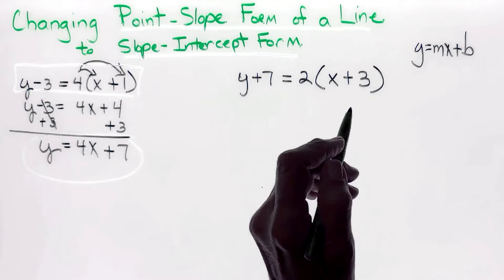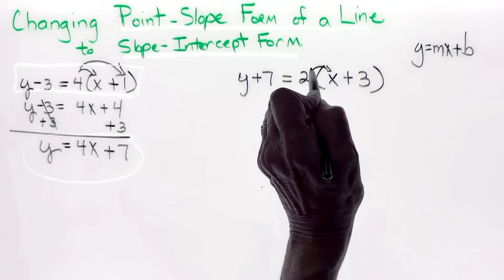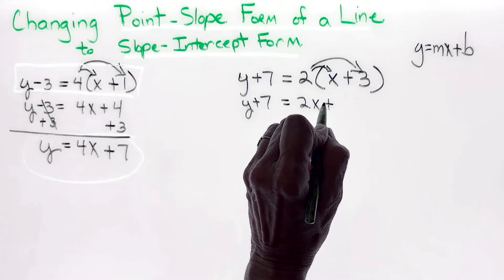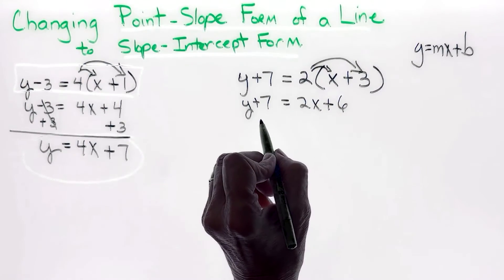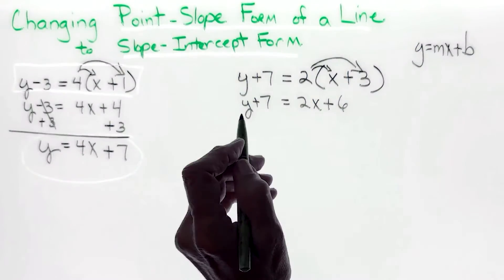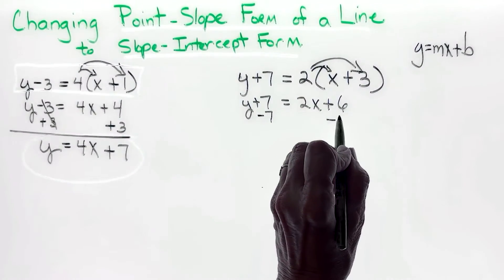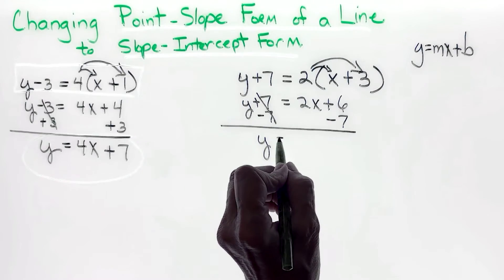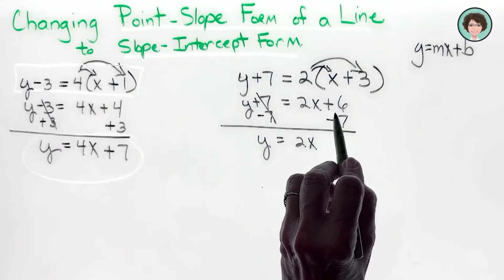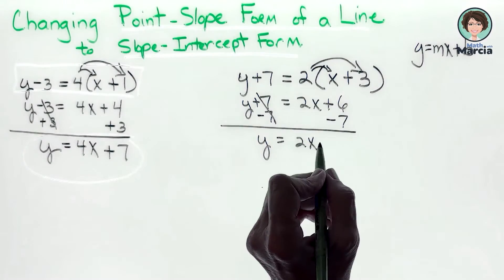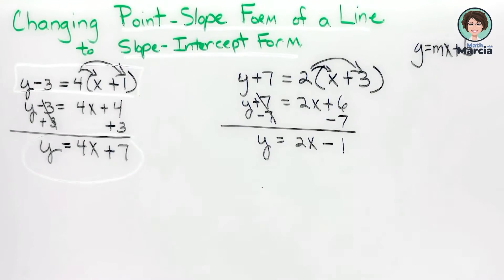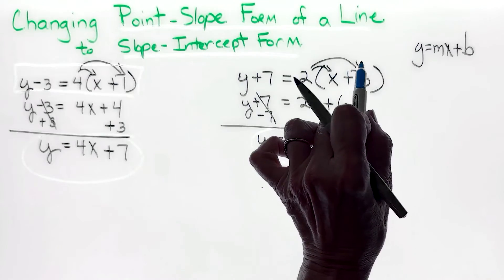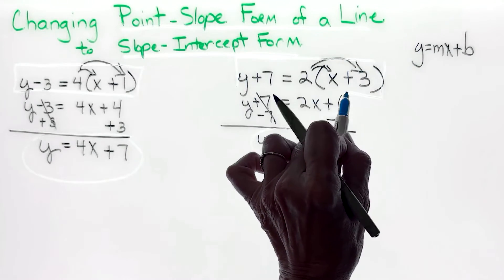Again starting with the distributive property: y minus 7 equals 2x plus 6. Getting it into y equals mx plus b form means the 7 has to move to the other side, so I need opposites to cancel. Y equals 2x plus 6 minus 7, which equals negative 1. This is our slope-intercept form — we started here with point-slope form.